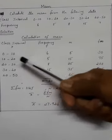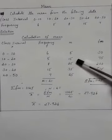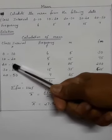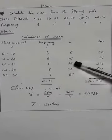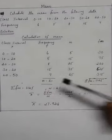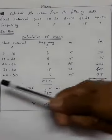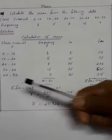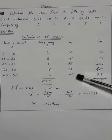10 plus 20 divided by 2 equals 15. 20 plus 30 divided by 2 equals 25. 30 plus 40 divided by 2 equals 35. 40 plus 50 divided by 2 equals 45.